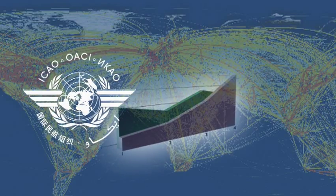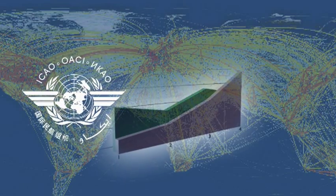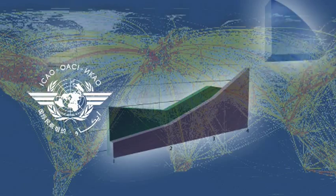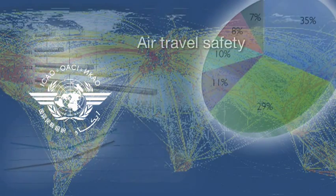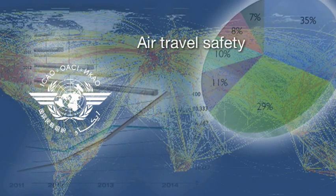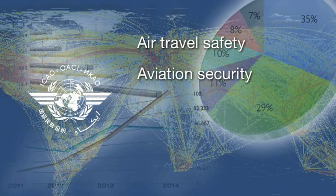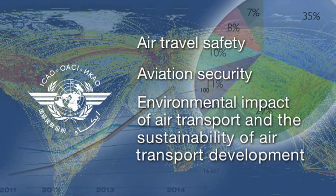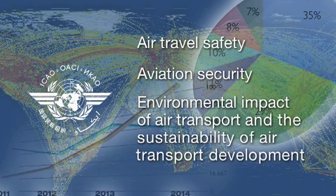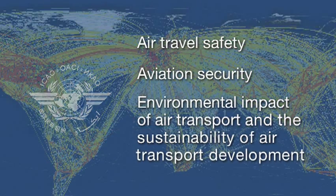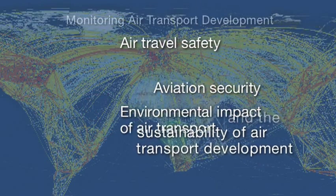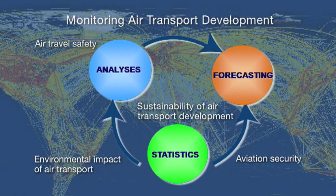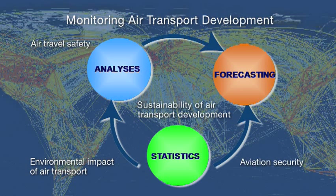ICAO statistics, forecasting, and analysis monitor the ICAO strategic objectives: air travel safety, aviation security, environmental impact of air transport, and the sustainability of air transport development. The data supplied by the 190 contracting states are the basis for the monitoring of these strategic objectives.